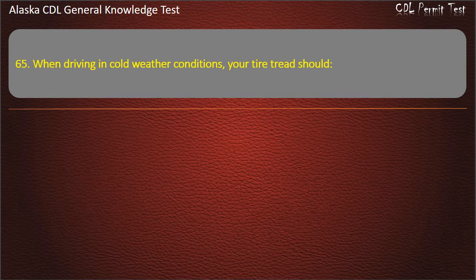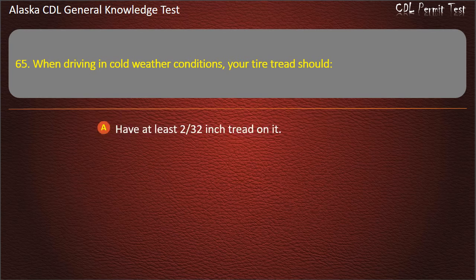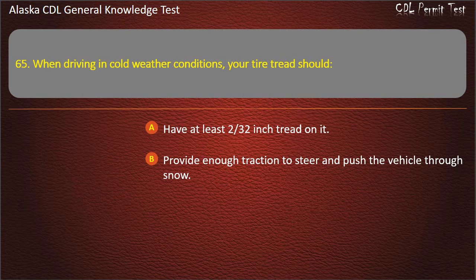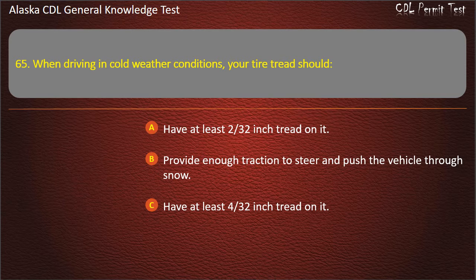Question 65. When driving in cold weather conditions, your tire tread should have at least two 32nds-inch tread on it, provide enough traction to steer and push the vehicle through snow, or have at least four 32nds-inch tread on it. Answer: Provide enough traction to steer and push the vehicle through snow.